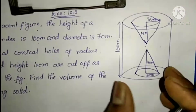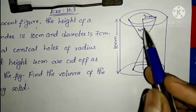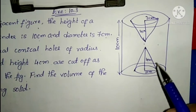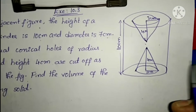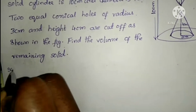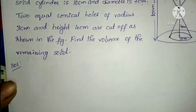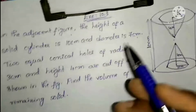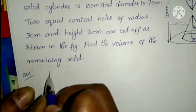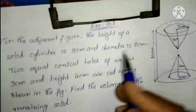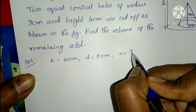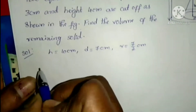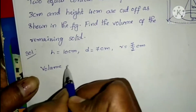The question involves one cylindrical shape with 2 conical shapes removed, having the same height and same radius. The volume of the remaining solid equals the cylinder volume minus the cone volumes. Height equals 10 cm, diameter is 7 cm, so radius is 7 by 2 cm.